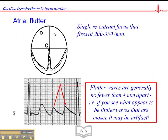The mechanism or etiology for atrial flutter is a single ectopic focus — typically a reentrant focus, firing at between 200 and 350 beats per minute.